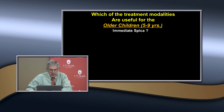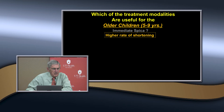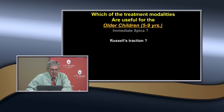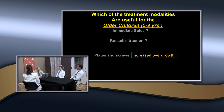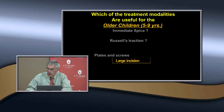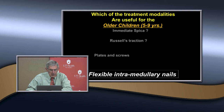For the older child, treatments include immediate spica depending on the situation, but most people use flexible nails. There's a higher rate of shortening in this age group. Russell's traction—they don't tolerate it at this age; they're heavier and don't tolerate the increased weight. Plates and screws can cause increased overgrowth of up to two centimeters, require a large incision, and you have to come back to take the plate out. Nowadays, what's really changed the treatment of femoral shaft fractures is the use of flexible intramedullary nails, which has become a very popular choice.